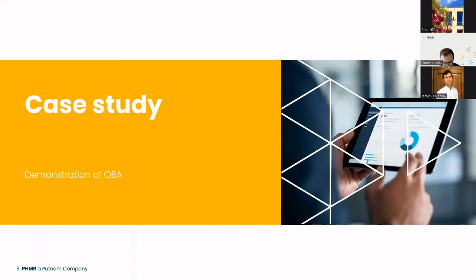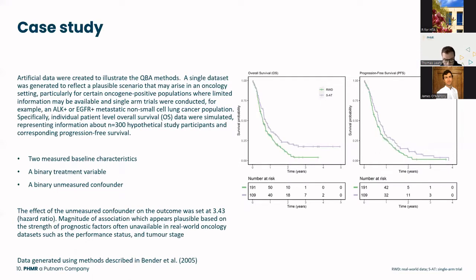Now let's introduce the case study used to illustrate the methods in R. Artificial data was created to reflect a plausible scenario in an oncology setting, particularly for oncogene-positive populations with limited information and potentially no lab trials — for example, EGFR-positive or LAP-positive metastatic non-small cell lung cancer. Individual patient-level overall survival and progression-free survival data were simulated, representing about 300 hypothetical study participants, with two measured baseline characteristics, a binary treatment variable, and a binary unmeasured confounder. The OS and PFS Kaplan-Meier curves are shown on the right, along with numbers at risk.